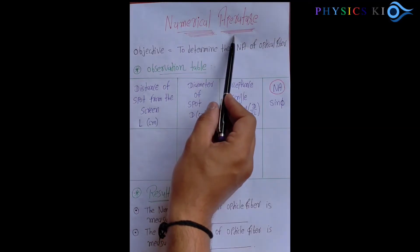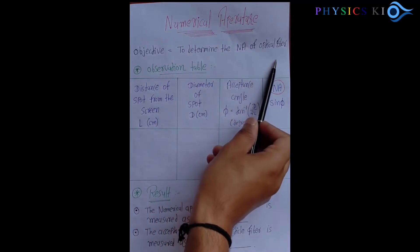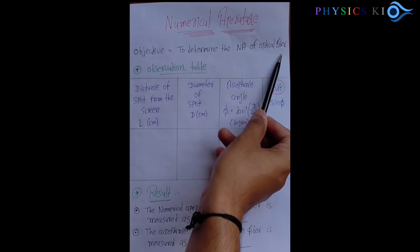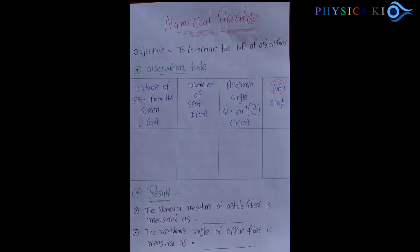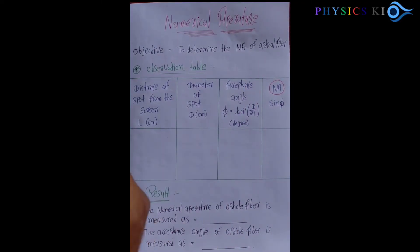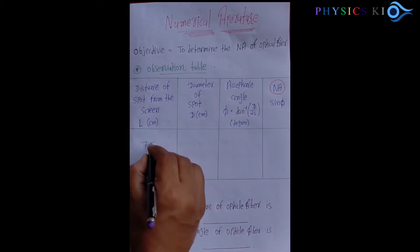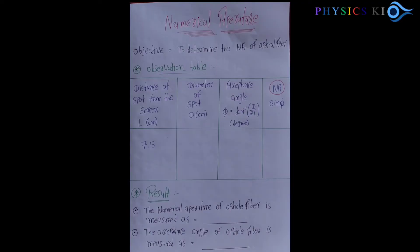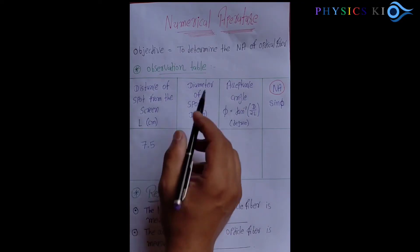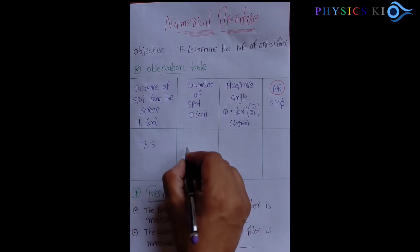This is our experiment for numerical aperture, and we want to measure the value. The distance between the spot and screen is 7.5 centimeters, and the diameter of the spot we noted is 5.1 centimeters.